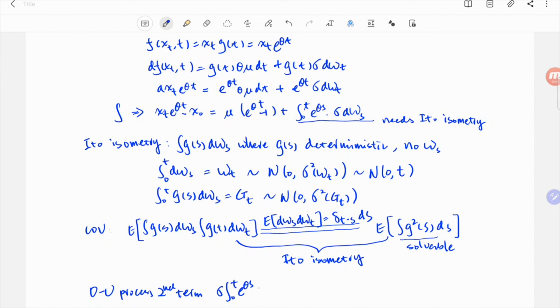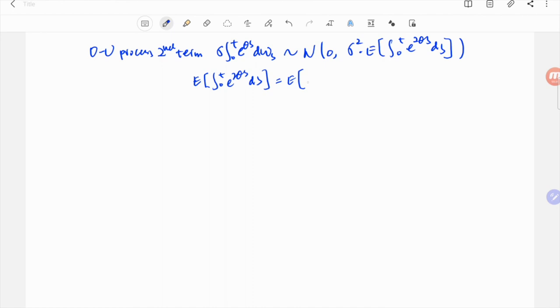Now with that, the second term in Ornstein-Uhlenbeck x_t follows the normal distribution with mean 0 and a variance given by the expected value of this integral. And the integral in the variance is very easy to solve, which is just 1 over 2 theta times e to the 2 theta t minus 1. And consequently, we arrive at the solution of x_t.